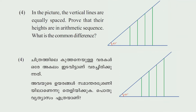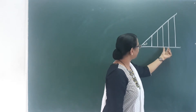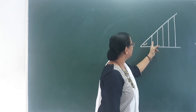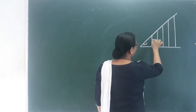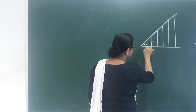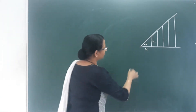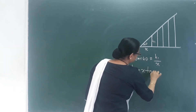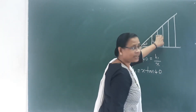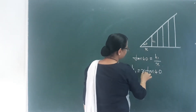Next question: In the picture, the vertical lines are equally spaced. Prove that their heights h1, h2, h3 are in arithmetic sequence and find the common difference. The height h1: using tan 40 equals h1 divided by x, so h1 equals x·tan 40.